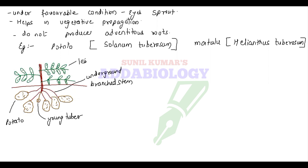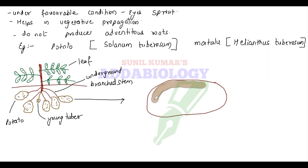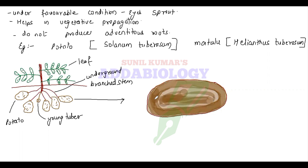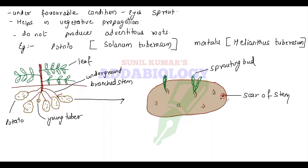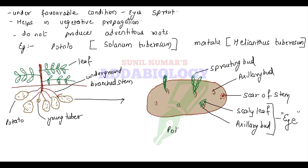Underground branch — potato young tuber. If I take out one potato, I will see the scar from where it has been broken, and I will see nodes and internodes. The nodes show the presence of special bud. These adventitious buds help them to grow or give rise to a new plant. During summer the potato sprouts — that is because of the presence of bud. Labels include: scar of stem, sprouting, axillary bud, nodes, internodes, and the eye of the potato. Scientific name: Solanum tuberosum.